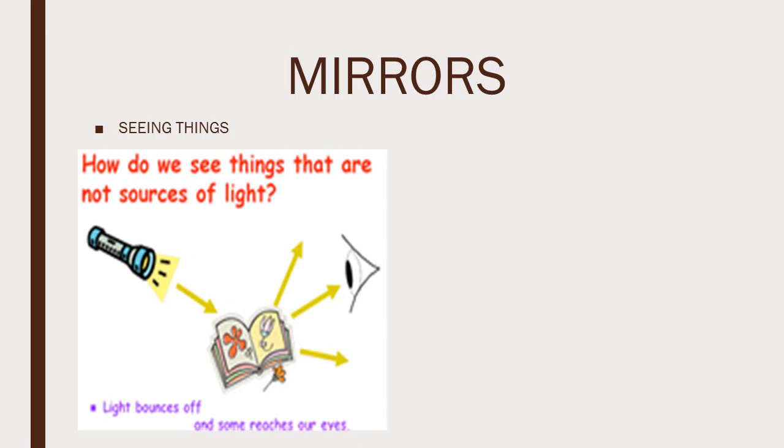In order for us to see things, light from the source, which in our example here is a flashlight, reflects off the picture, which is the flower in the book, and then the light bounces off and bounces into our eyes. And that is how we are able to see images.